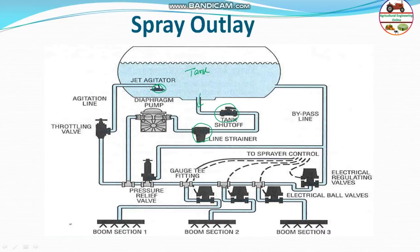Different types of pumps can be used. After the pump, liquid goes to the pressure relief valve, which controls the pressure. If pressure is too high, the relief valve bypasses excess liquid back to the tank. Part of the liquid is also passed through an agitation line or throttling valve to produce a jet inside the tank, providing continuous agitation — this is called the jet agitator.